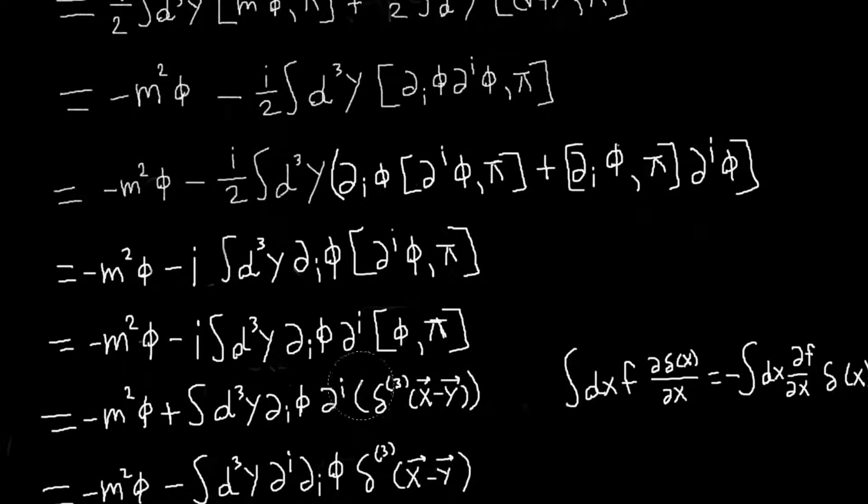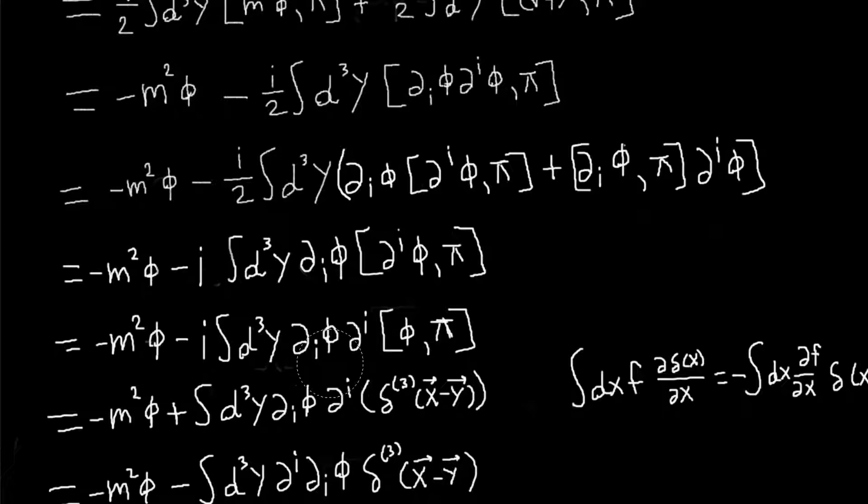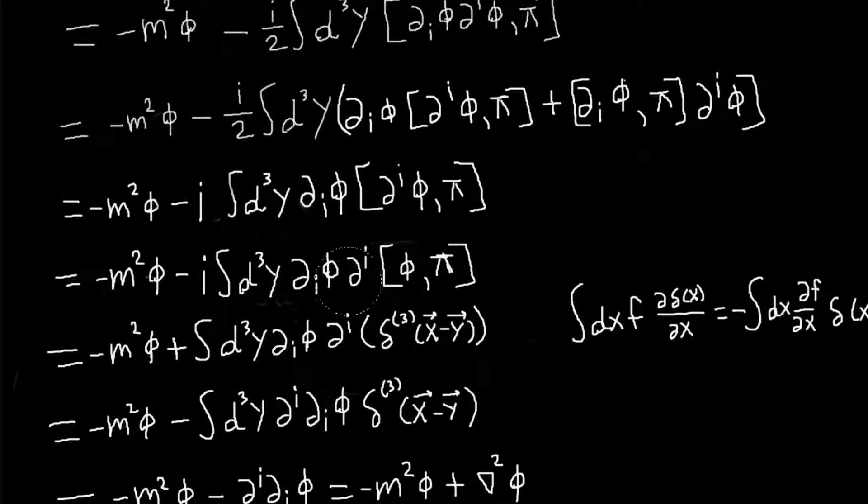So I'll end up with the derivative of a delta function, and I can use the property of the delta function that if I have the integral of some function of x times d delta of x dx, then that is the same as minus the integral of df/dx, with delta x, so basically it just gives me a way of writing this derivative of a delta function in terms of a delta function.